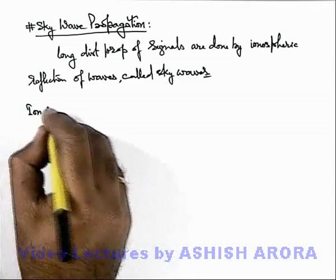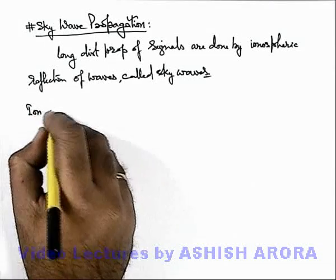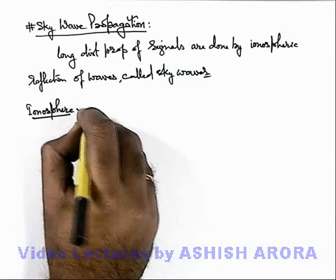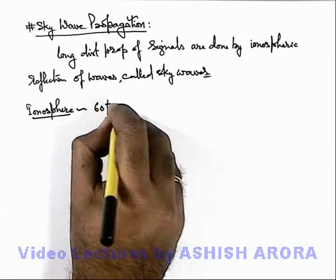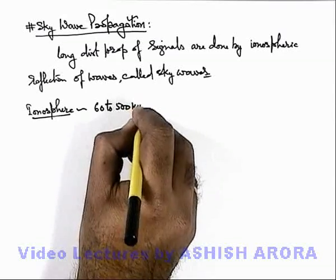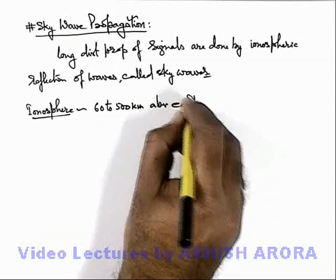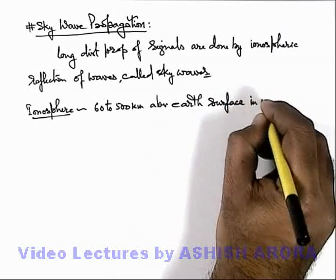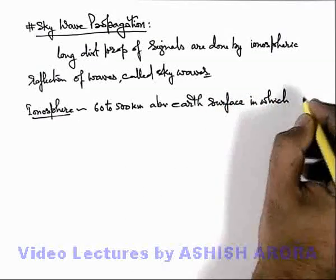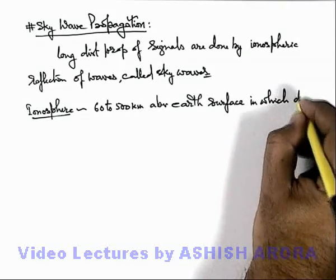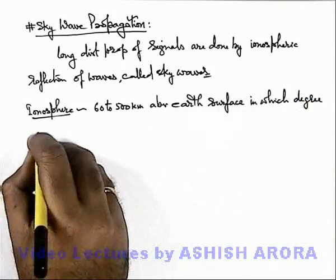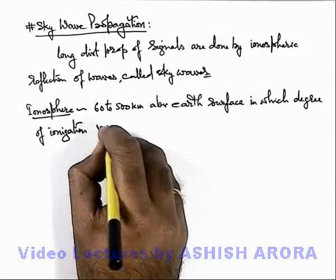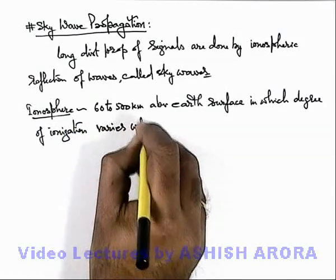The ionosphere is in the range from 60 to about 500 kilometers above Earth's surface, in which various layers are present. The degree of ionization of the ionosphere varies with height.